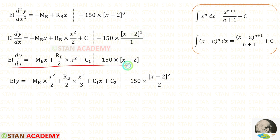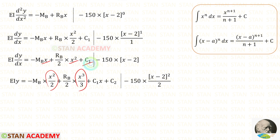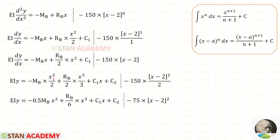Now let us integrate again on both sides. Integrating X gives X squared over 2; integrating X squared gives X cubed over 3. For the term with no X, we simply multiply by X. C2 is the new constant. For the moment term, 1 over 2 gives 0.5, and 2 into 3 gives 6. We can simplify, giving 75.